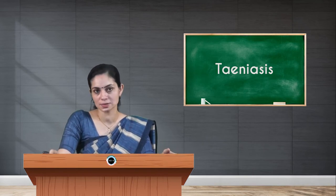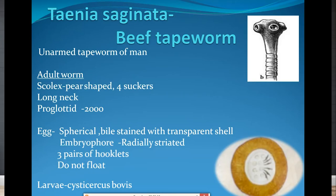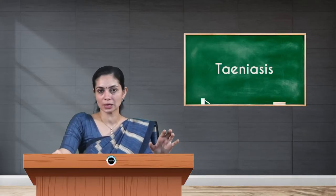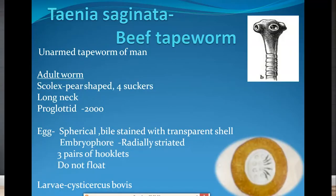Coming to the first species, Taenia saginata — this parasite is otherwise called the beef tapeworm. If you see the adult worm, there are three stages for the parasite: adult worm, egg, and the larval stage. The scolex or head will be pear-shaped with four suckers for attachment, followed by a long neck. In Taenia saginata, the neck will be longer, and the number of proglottids may exceed a thousand — up to two thousand.